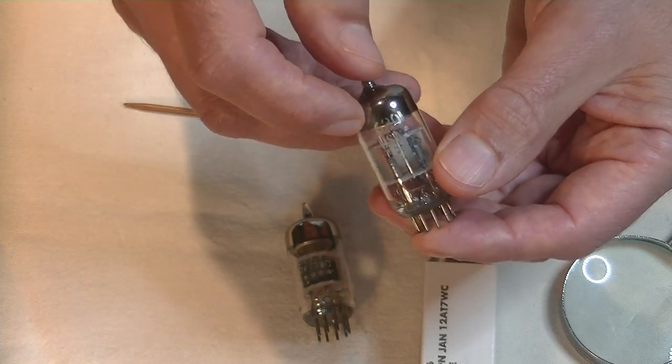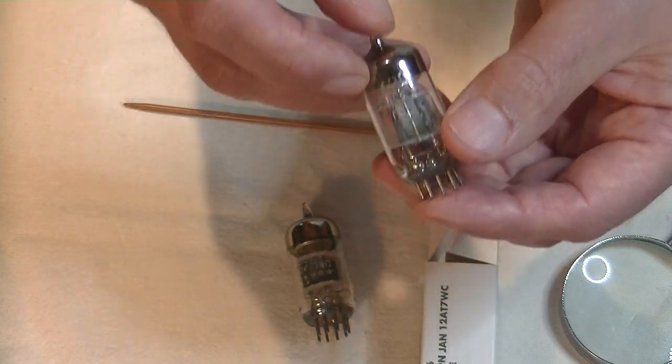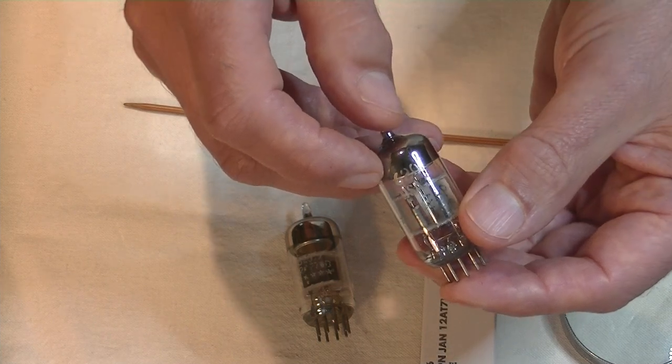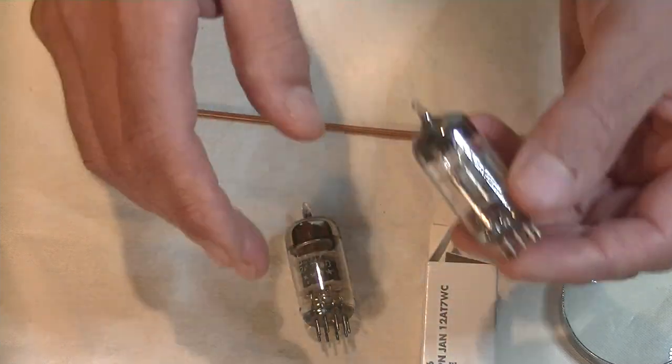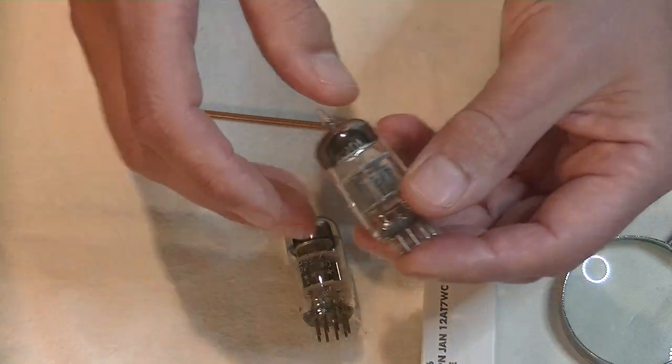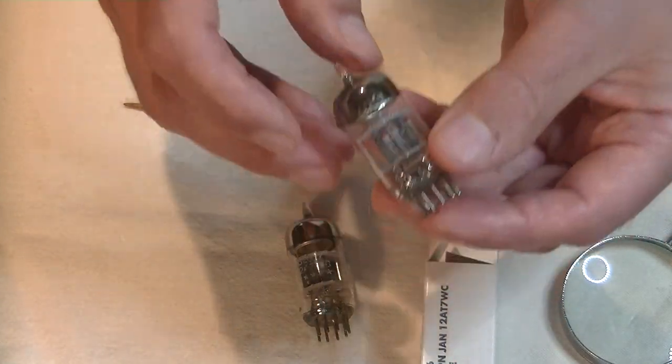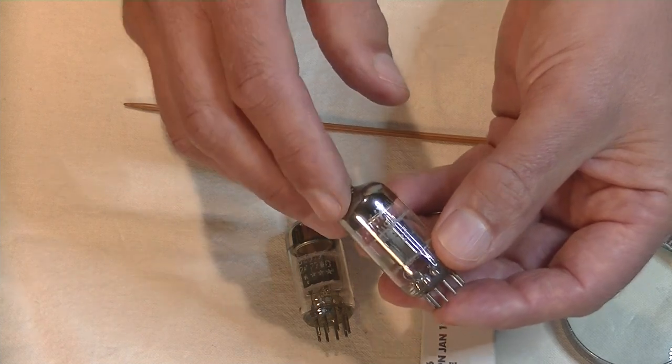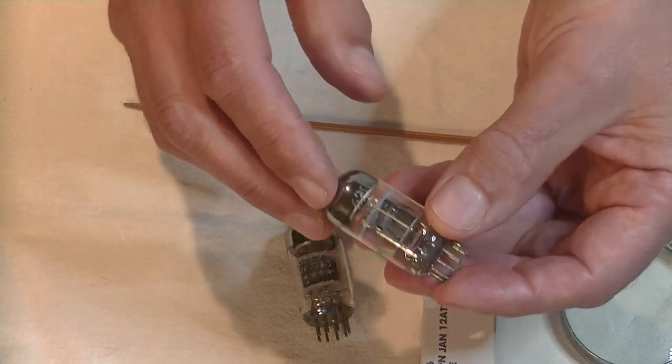Now, what's with the WC, attached to the end of the tube designation? This is just a series or tube model designation. So, the previous GE was a WB. This is a WC. So, this is the next tube in that line, as far as development goes.